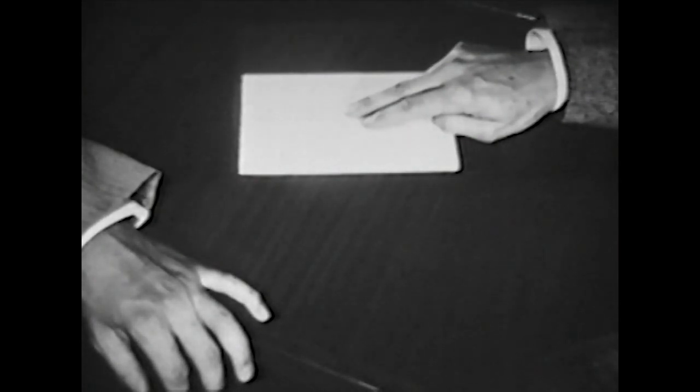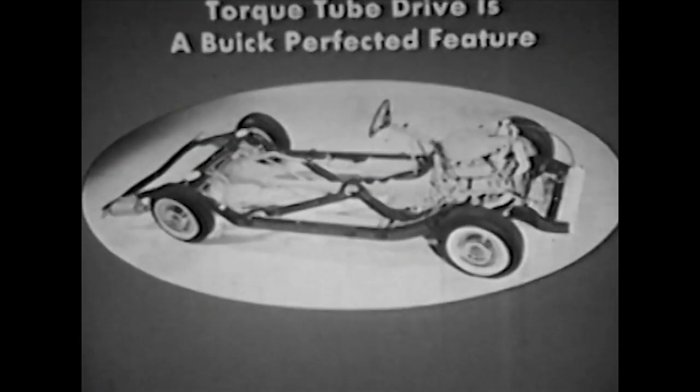Now when it comes to air ride, Buick's torque tube drive is all set for air suspension. Other cars will have to convert to some system of levers in order to use air suspension, not Buick. Keep that in mind, because torque tube drive is a Buick perfected feature that Buick has been building and testing for years. Torque tube drive is time-proved in millions of Buicks. So now let's see how this great new across-the-board option, air poised suspension, still further improves Buick's great ride.